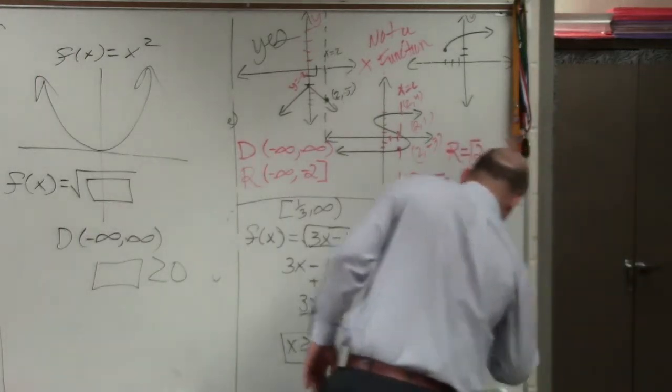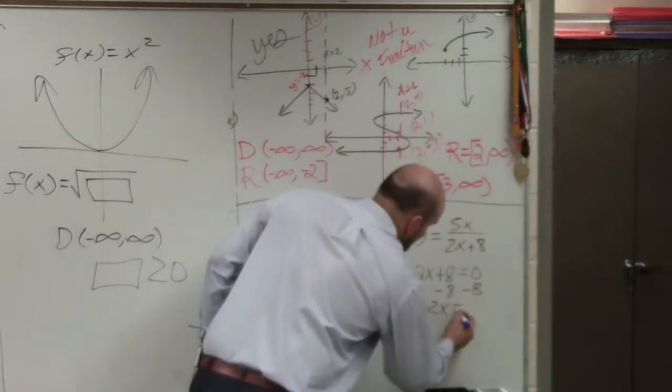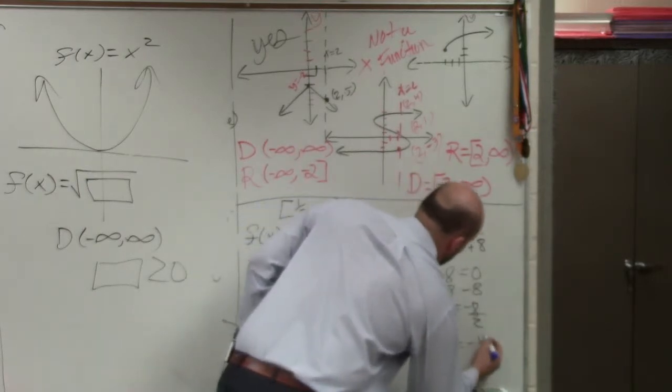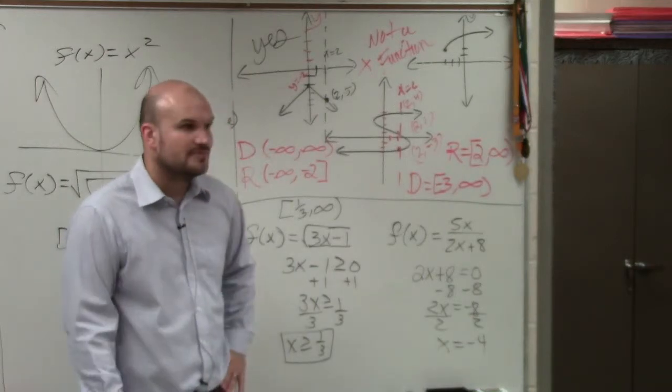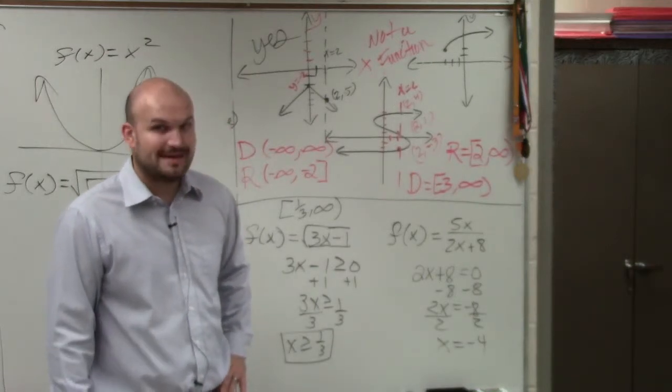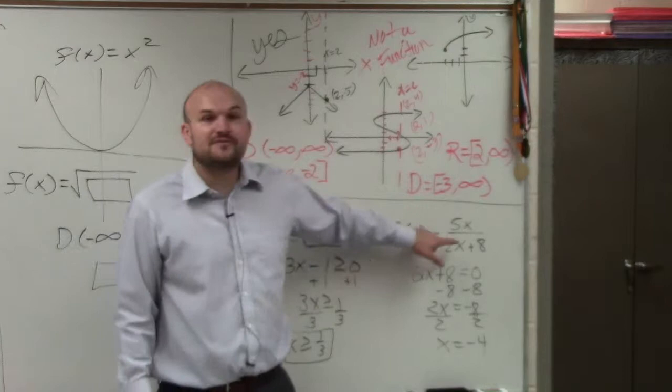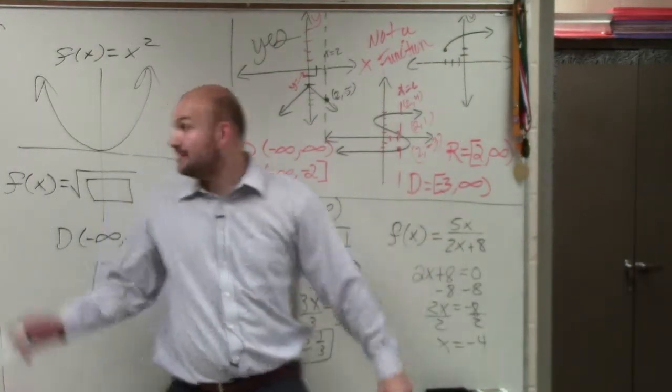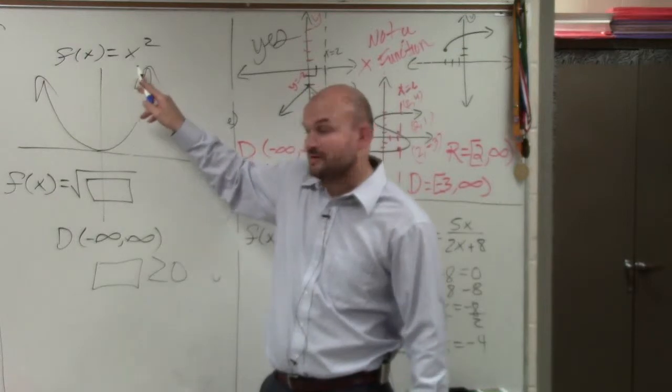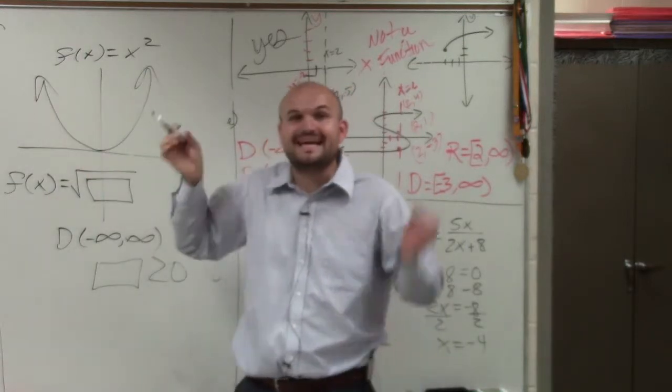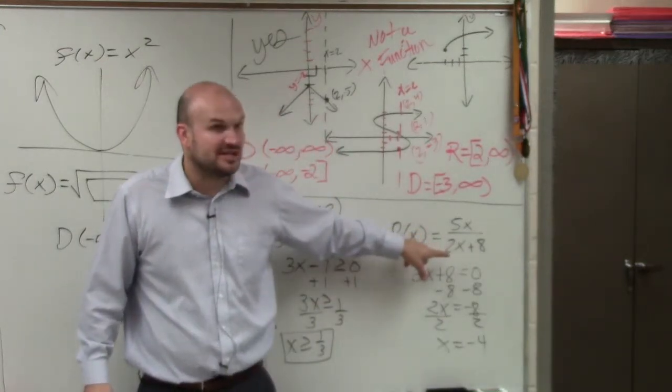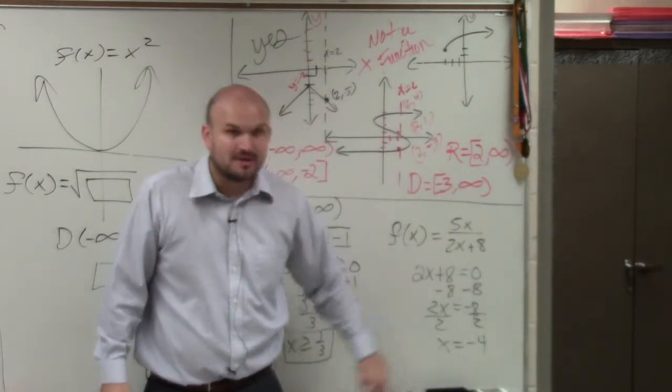Pretty important stuff to remember. So you have 2x equals negative 8. x equals negative 4. So what that means is every single number in the real number system is a part of my domain. Every number, like this one.